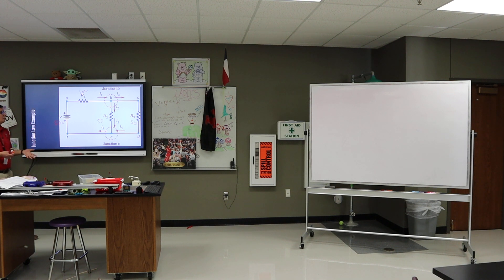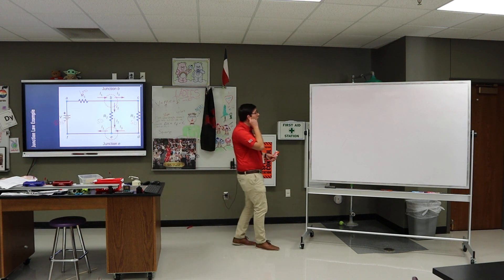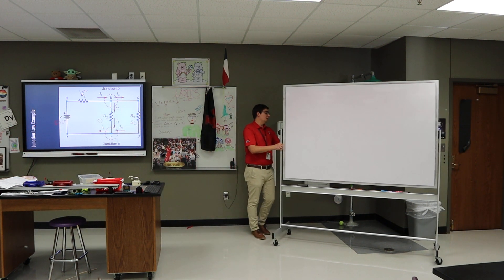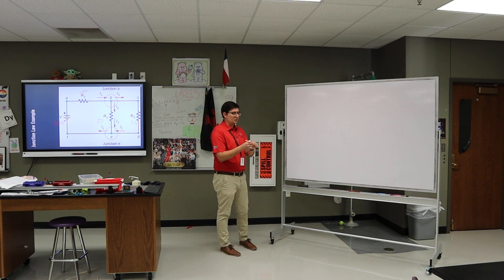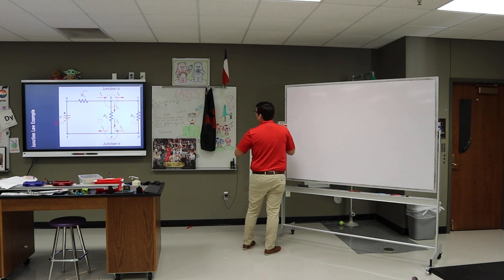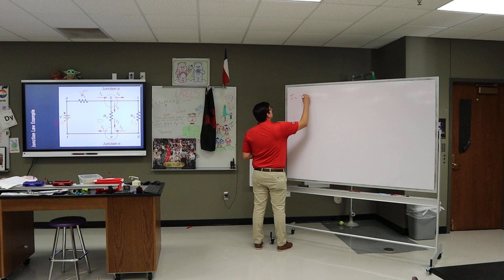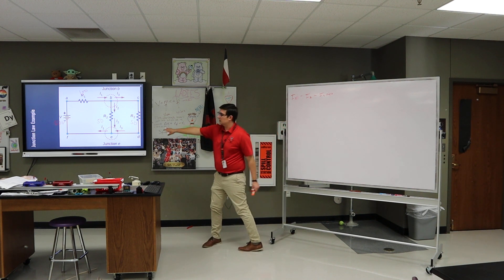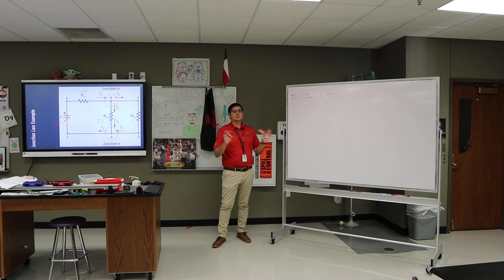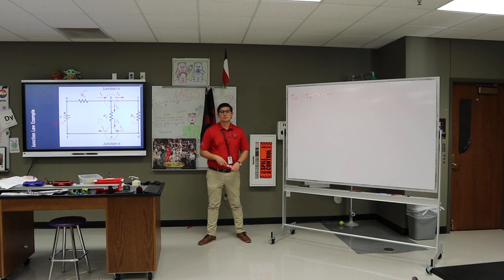Now I'll write my junction rules. For junction B, we already wrote: I1 minus I2 minus I3 equals zero. We already said the junction E equation is a duplicate, so I'm not going to worry about that one.